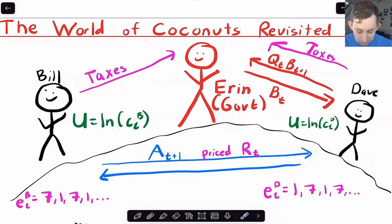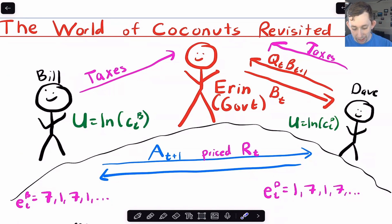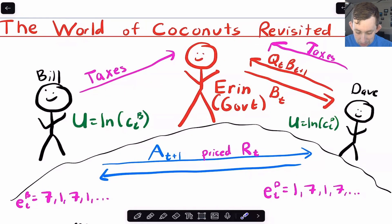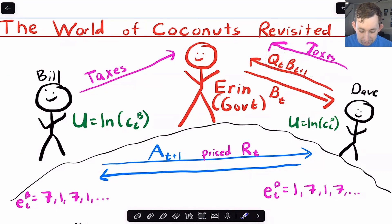In part four, we had Bill and Dave with a utility function that is just the natural log of their consumption — everything in terms of coconuts. Now we have Aaron, who represents the government. Bill and Dave have to pay taxes to Aaron, and the government can issue bonds. The only person who can hold those bonds is Dave. So if Aaron wants to sell a bond to Dave, Dave pays a price QT to hold bond BT plus one. Bill and Dave can still trade assets between themselves, calling that AT plus one with price RT.